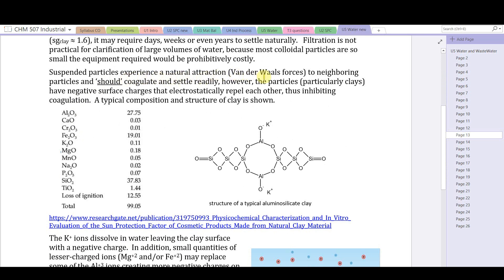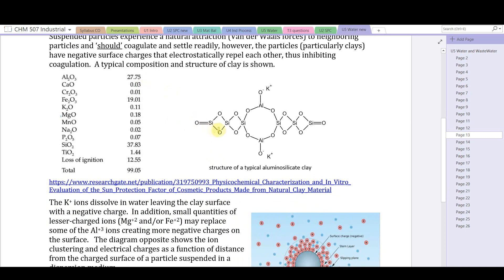Suspended particles experience a natural attraction - all particles do, van der Waals forces - to neighboring particles, and they really should coagulate and settle. However, the particles, particularly clays, have negative surface charges as explained previously, and the electrostatic charges repel each other, inhibiting coagulation. Here's a typical composition and potential structure of an aluminosilicate clay, a very common form of clay.